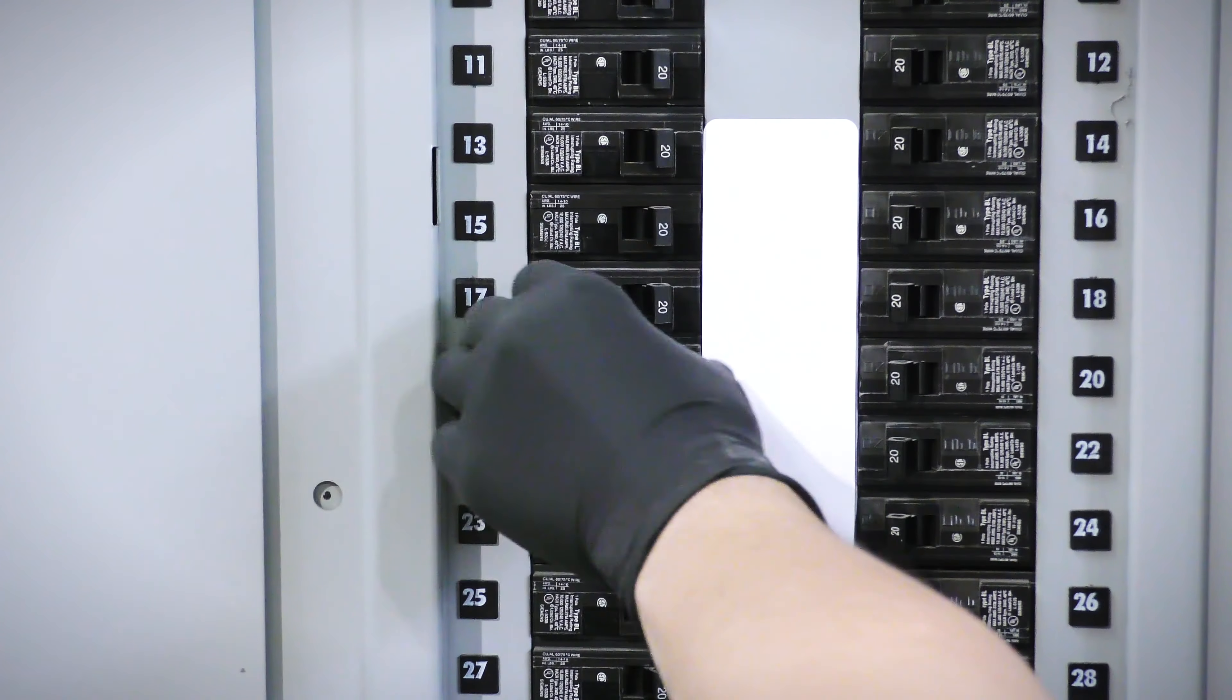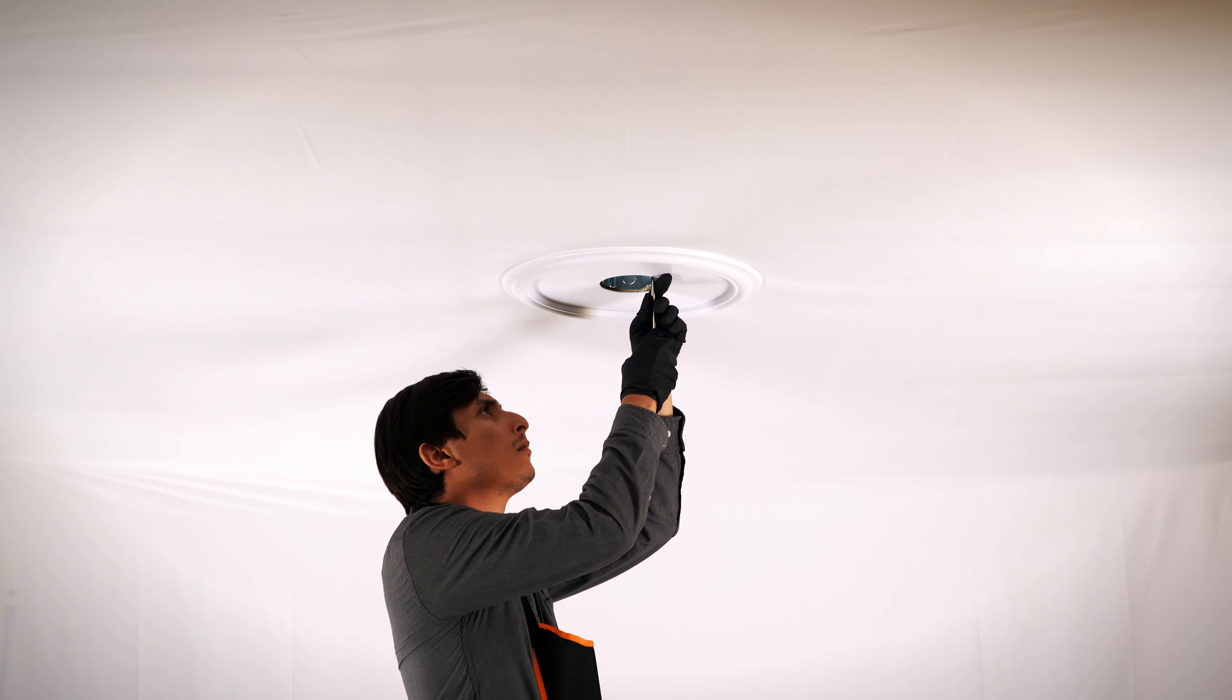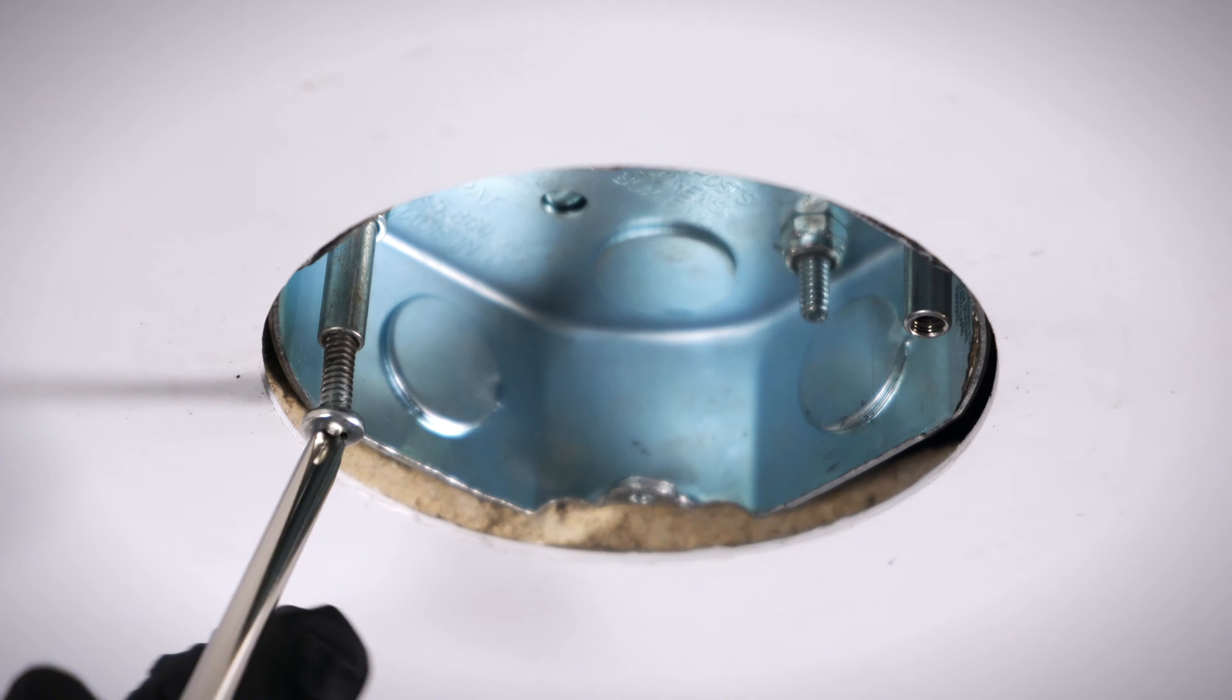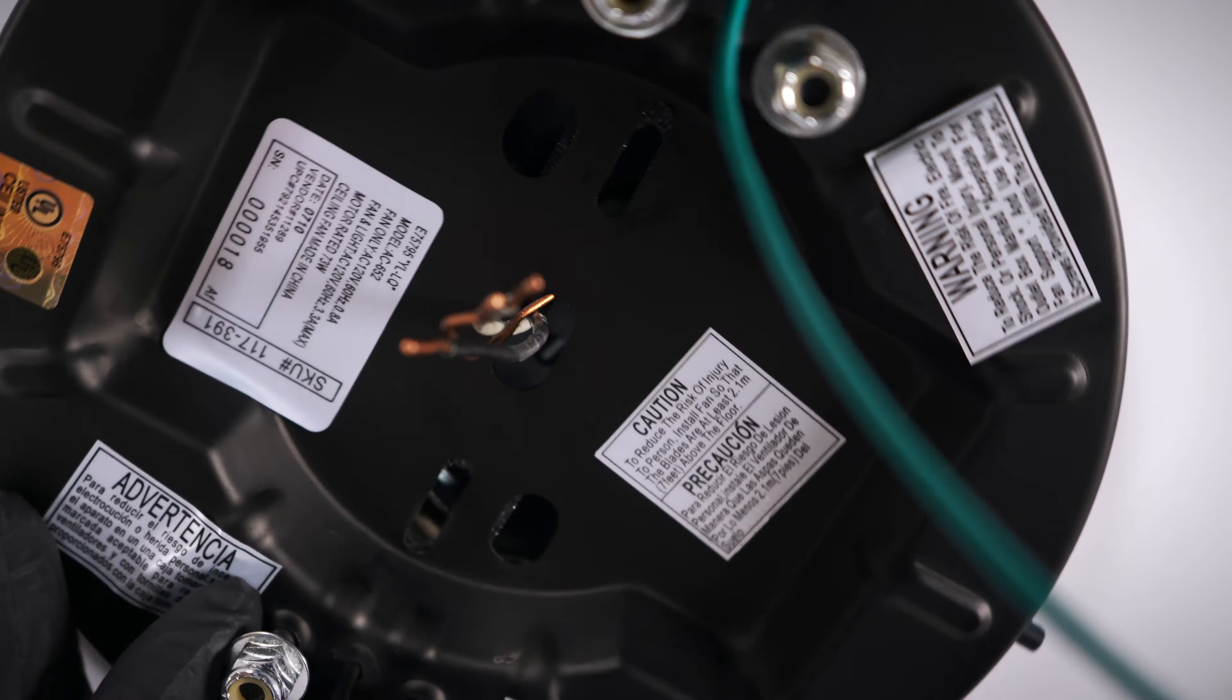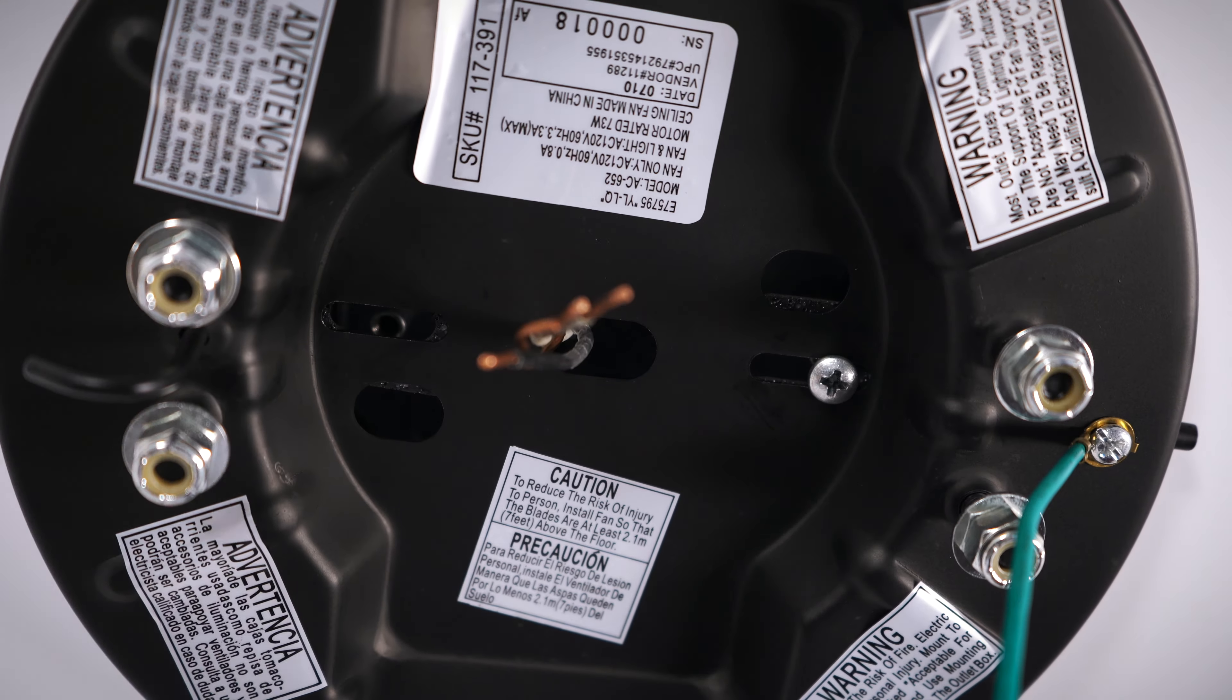Begin by turning power off at the breaker. On the ceiling box, remove the two screws. Bring the mounting bracket up to the box and align it over the holes. Insert and tighten both screws securely.